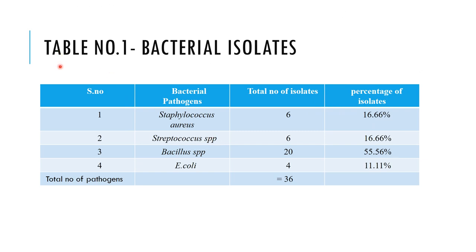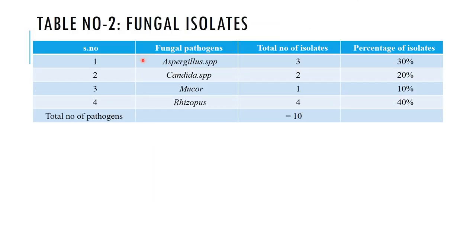This is the data of the bacterial isolates from the mobile phone. The isolates identified are: Staphylococcus aureus, Staphylococcus species, Bacillus species, and Escherichia coli — with Bacillus species having the highest number. For fungal isolates, they identified Aspergillus species, Candida species, Mucor, and Rhizopus — with Rhizopus and Aspergillus species having the highest numbers.